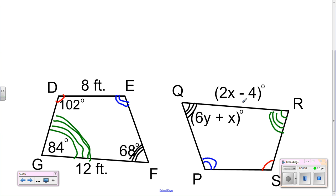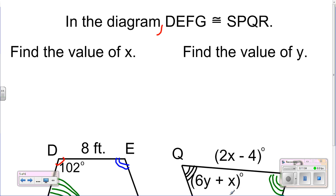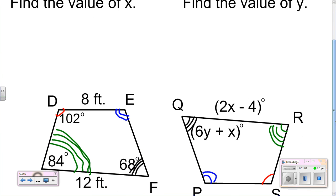Now if you look at the variables at the top it said to solve for X and find the value of Y. So X shows up twice. It shows up here in the side length, it shows up here in 2X minus 4, and it shows up here in 6Y plus X. But because this has two different variables in it, we can't solve, so we have to solve the 2X minus 4 first. And that would be congruent to 12 because QR is the same as GF or FG.